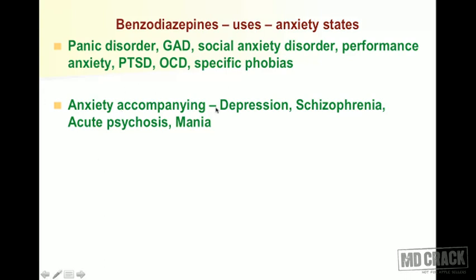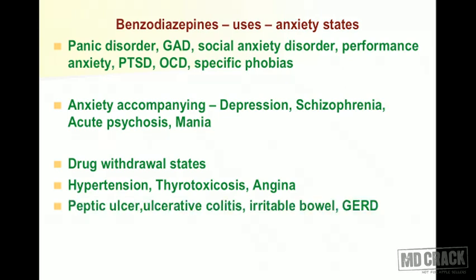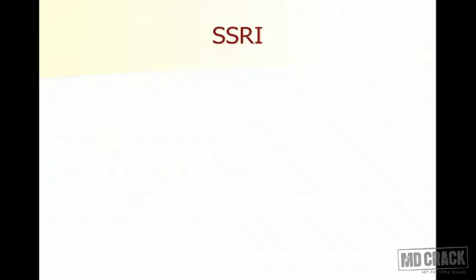There is a very important role for benzodiazepines when anxiety accompanies depression, schizophrenia, acute psychosis, or mania. They are also extremely useful in drug withdrawal states. Benzodiazepines are useful for anxieties associated with other systemic illnesses like hypertension, thyrotoxicosis, angina, peptic ulcer, ulcerative colitis, irritable bowel syndrome, and gastroesophageal reflux disease.